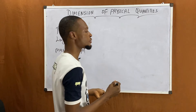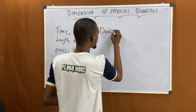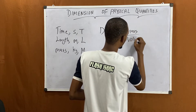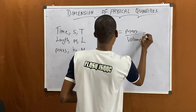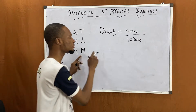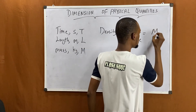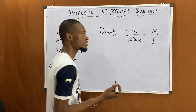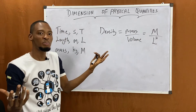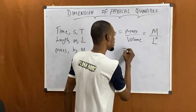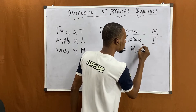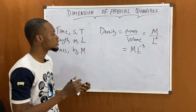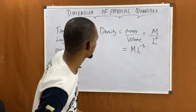Now let's look at density. Density equals mass over volume. Mass has dimension M, and volume we got as L³. So the dimension for density is M over L³, which is the same as M·L⁻³. That's density — pretty simple!